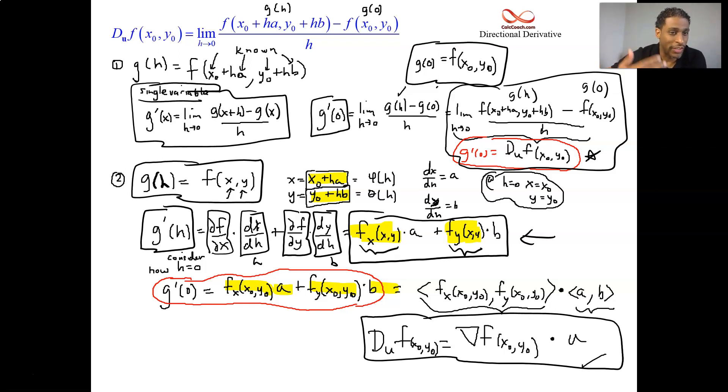So g prime of x is equal to the limit as h goes to zero of g of x plus h minus g of x. That's the definition of a derivative, right? And so for you then, g prime of zero is the limit as h goes to zero of g of h minus g of zero all over h. Now, g prime of zero is going to end up being the directional derivative. We have to show that. And so what we have then is g of h is the first half of the numerator. g of zero is the second half of the numerator. They're subtracting, and it's all divided by h. And so then we've recast the directional derivative as the symbol g prime of zero.